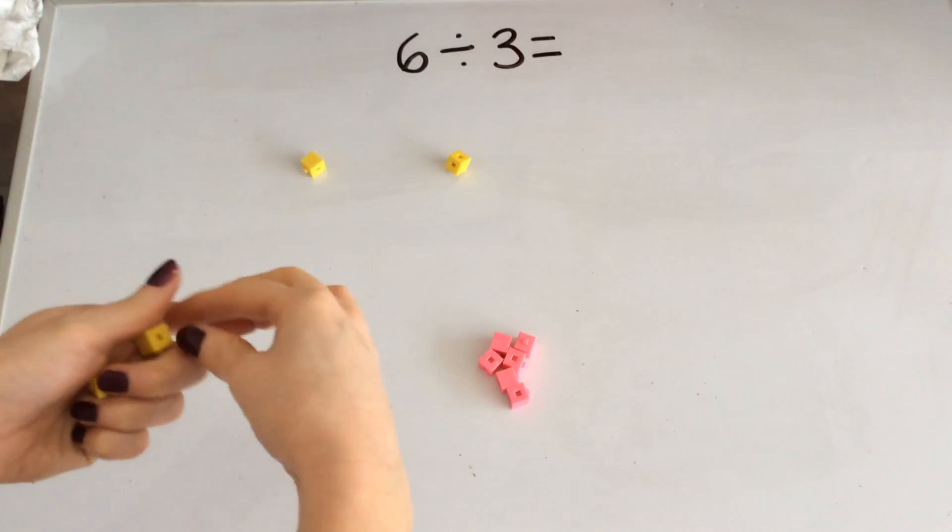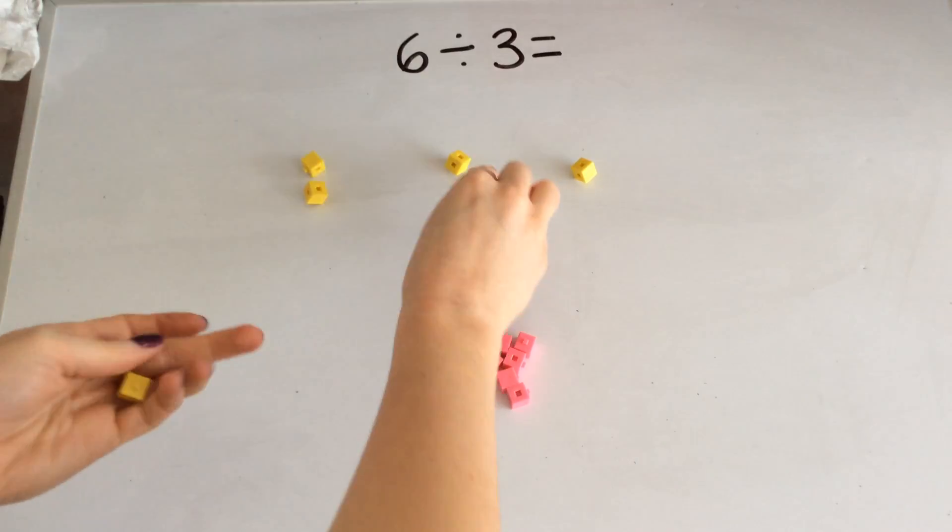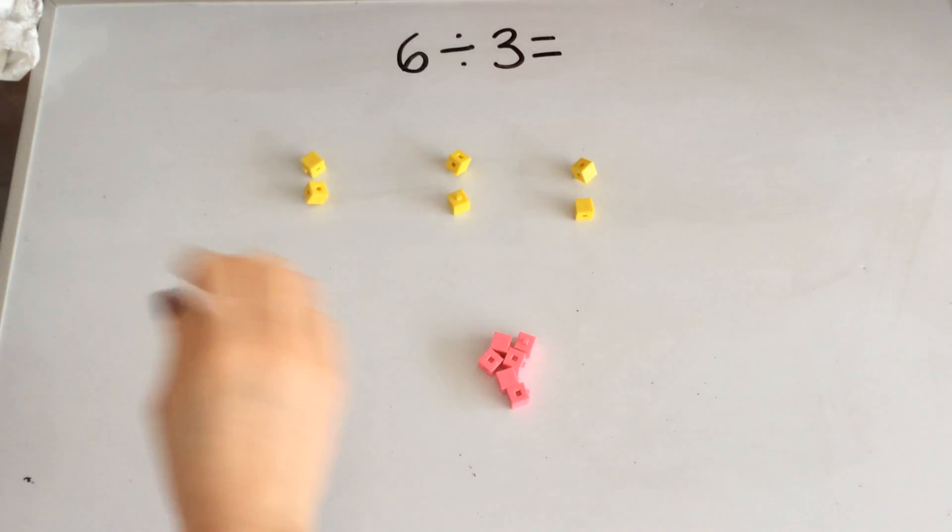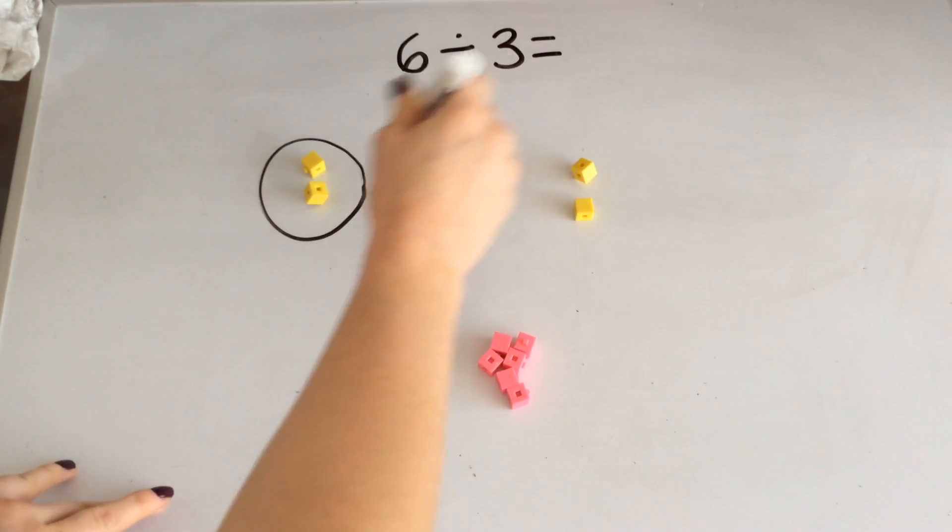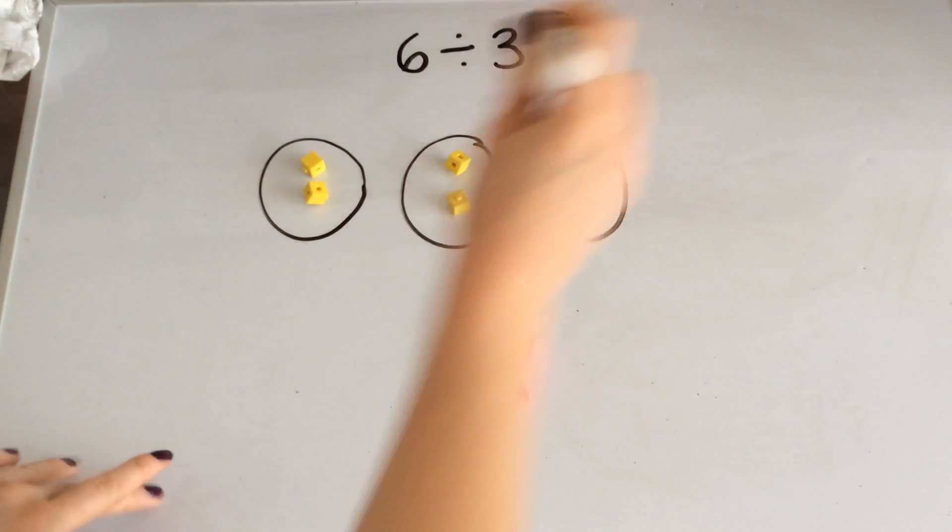One, one, and one. One, one, and one. I've shared my 6 into 3 equal groups.